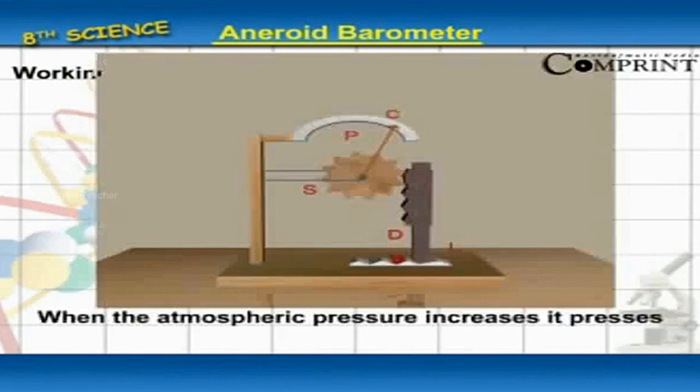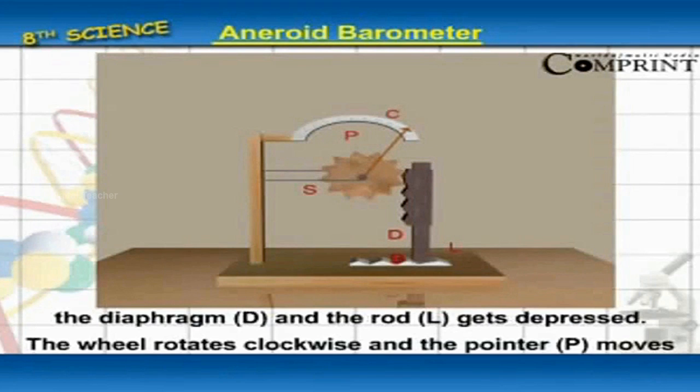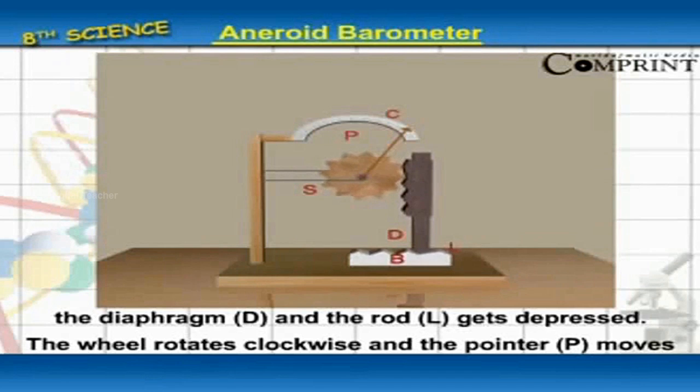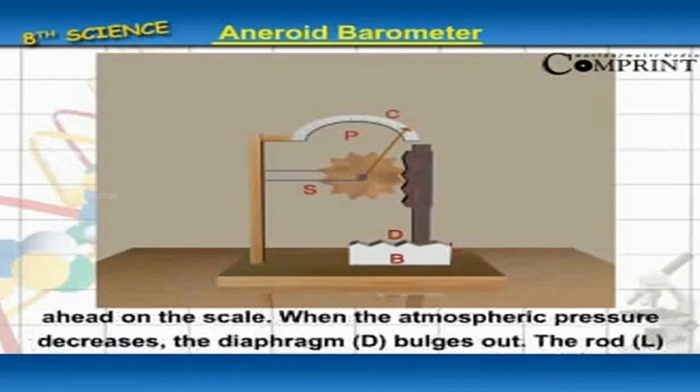When the atmospheric pressure increases, it presses the diaphragm D and the rod L gets depressed. The wheel rotates clockwise and the pointer P moves ahead on the scale.